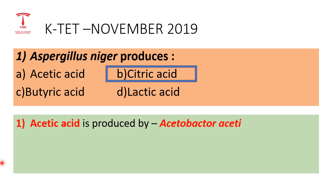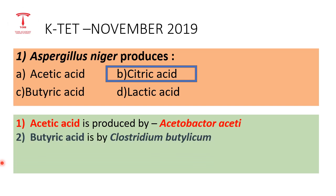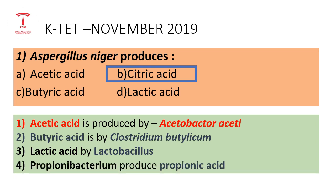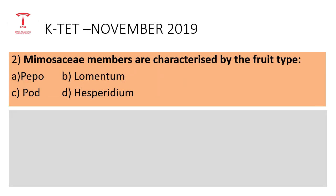For the other options: Acetic Acid is produced by Acetobacter. Butyric Acid is produced by Clostridium butyricum. Lactic Acid is produced by Lactobacillus. Propionibacterium produces Propionic Acid.